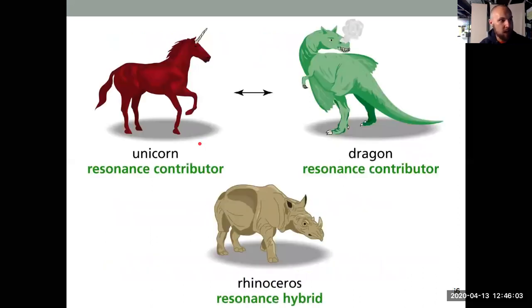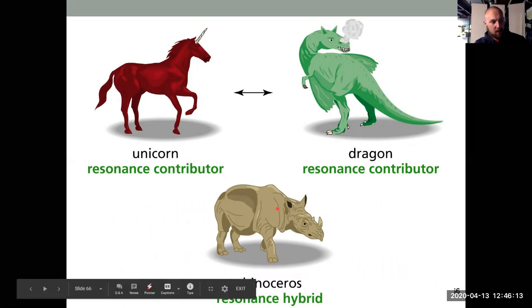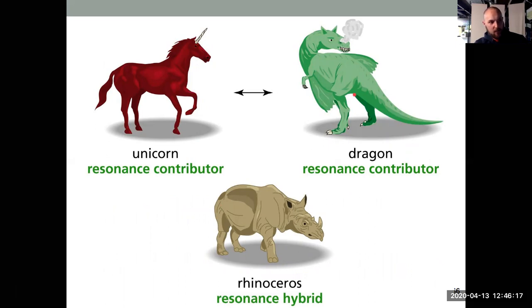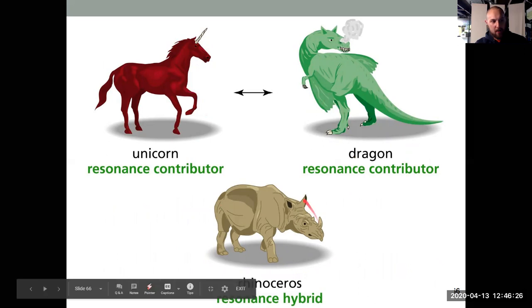And a slide that I've pulled from a different textbook to describe that is the idea of a rhino being a hybrid between a unicorn and a dragon. A unicorn and dragon would be resonance contributors. They don't actually exist.